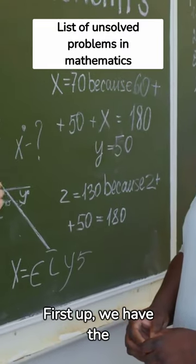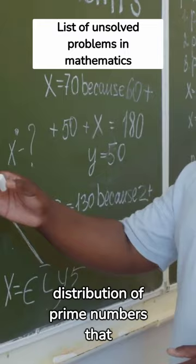First up, we have the Riemann Hypothesis, a conundrum about the distribution of prime numbers that has puzzled mathematicians for centuries.